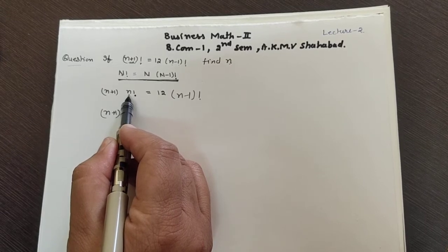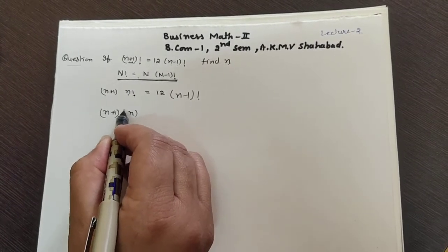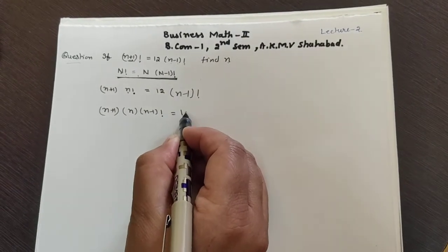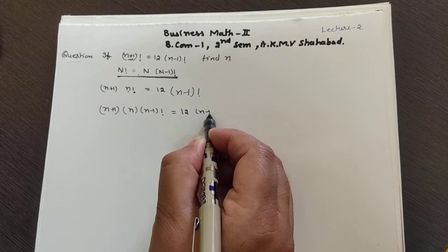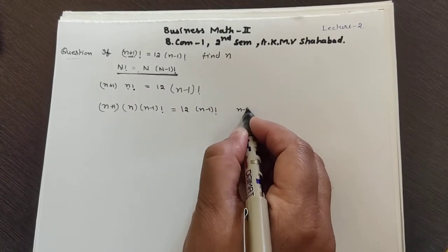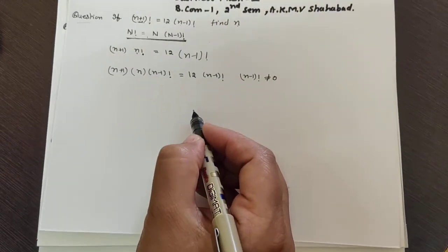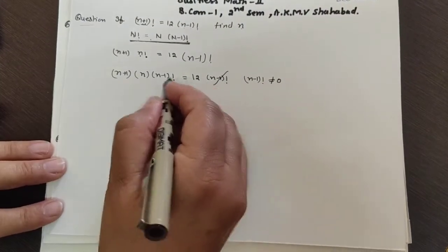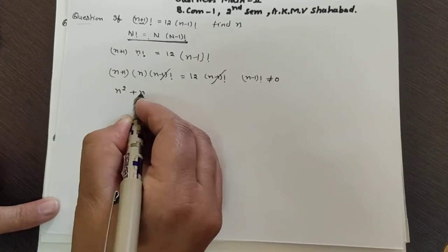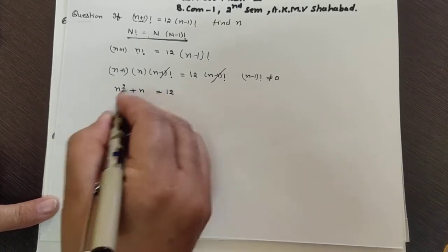Applying the formula again: the value of capital N is small n, so we get n·(n-1)! on the left side, equal to 12·(n-1)! on the right side. Since (n-1)! is never equal to 0, we can cancel this term from both sides. The balance is n²+n.